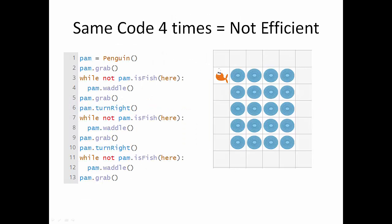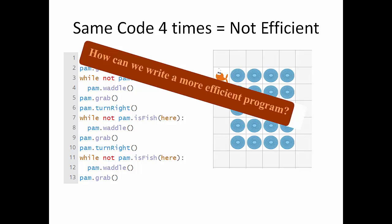Now, if statements and while loops will come in handy when we're dealing with a situation like this, where, without if statements, we'd have to write three while loops to navigate Pam from the top left corner of the water box all the way around its perimeter to get that fish. So how can we write a more efficient program using if statements?